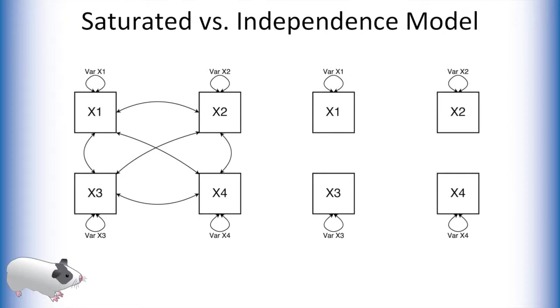On the right we have what is known as an independence model of the same data. This model assumes that there is exactly zero relationship between the variables in our dataset. While this model is parsimonious, it is not very likely.